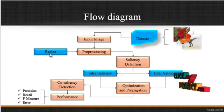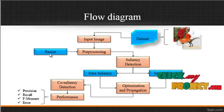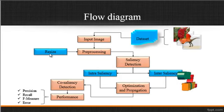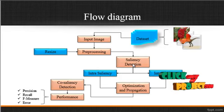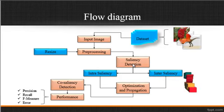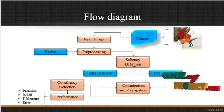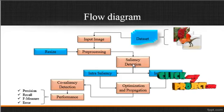In this pre-processing step, we are using image arrays. In the image arrays, we can reduce the dimension by the aspect ratios. After the arrays, the saliency detection is carried out. In this saliency detection, we have to segregate the step into two steps.